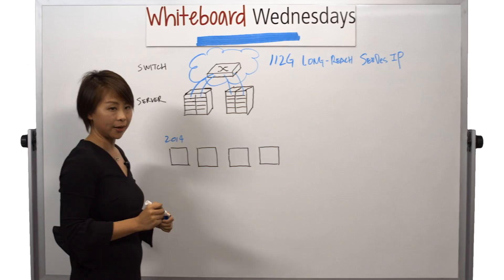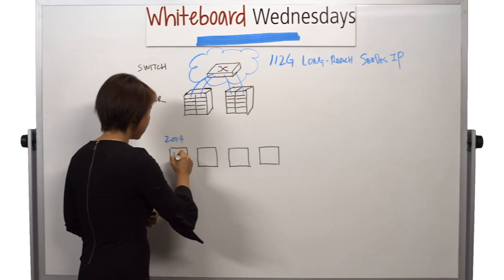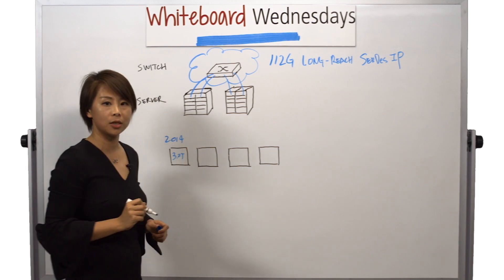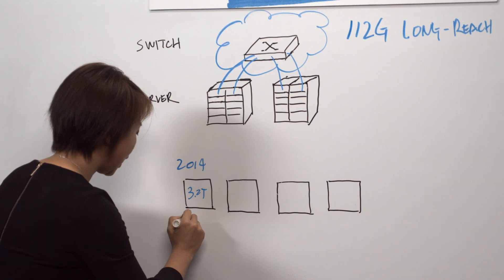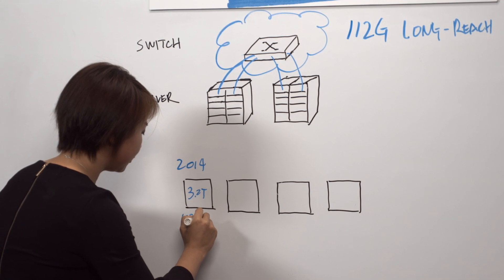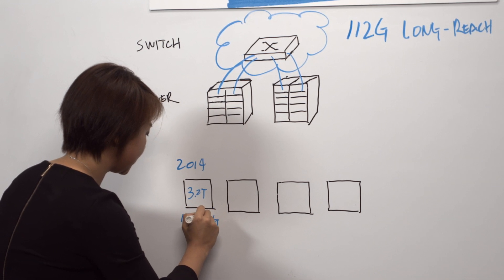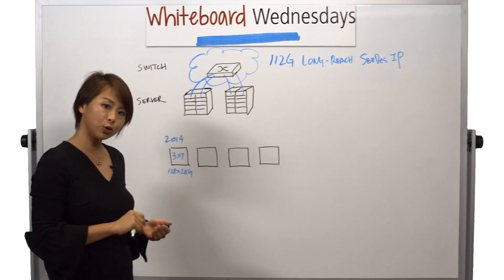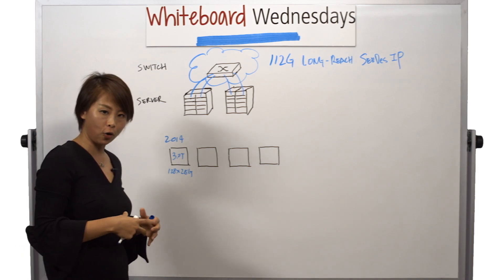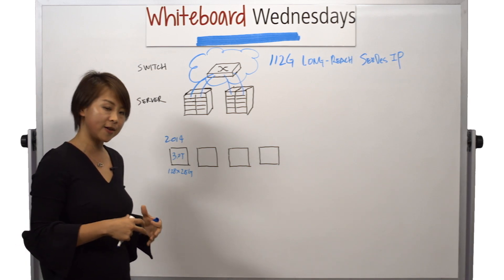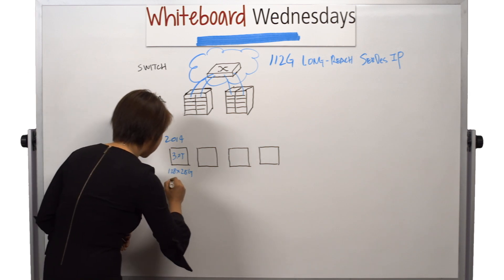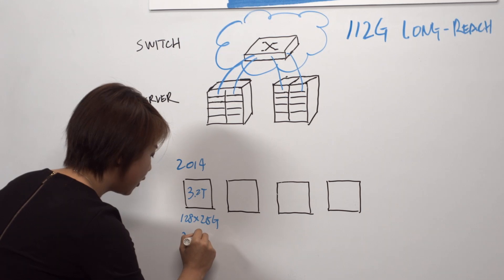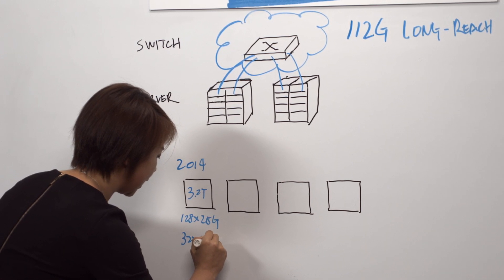Back in 2014, the first 3.2 terabit switch was introduced that used 128 of 25G SerDes. Every four 25G SerDes can form a 100 gig Ethernet link. So this switch essentially can support 32 100 gig Ethernet links.